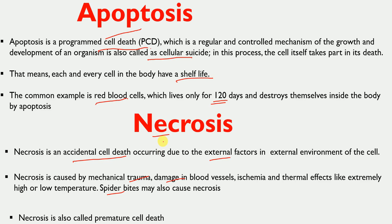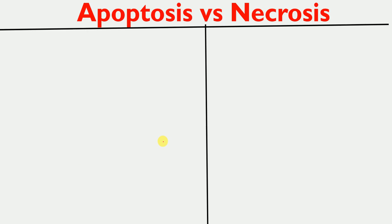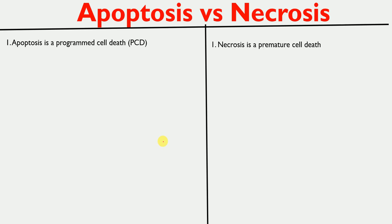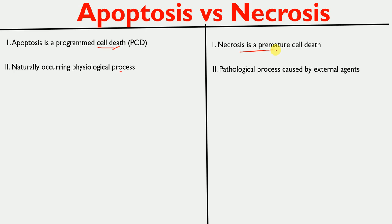Now, the point-by-point differences: Apoptosis is programmed cell death, whereas necrosis is premature cell death. Apoptosis is a naturally occurring physiological process, whereas necrosis is a pathological process caused by external agents.